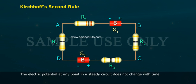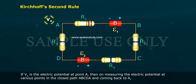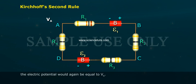The electric potential at any point in a steady circuit does not change with time. If VA is the electric potential at point A, then on measuring the electric potential at various points in the closed path ABCDA and coming back to A, the electric potential would again be equal to VA.